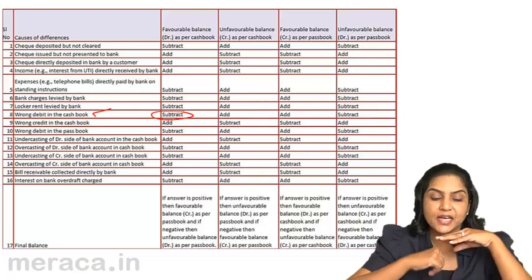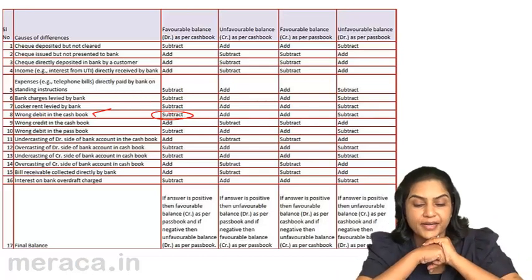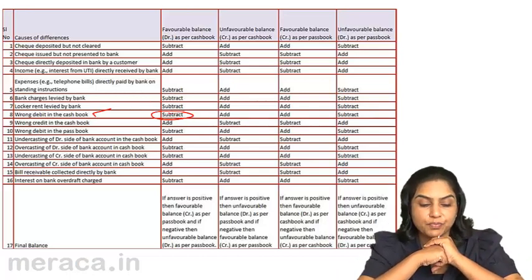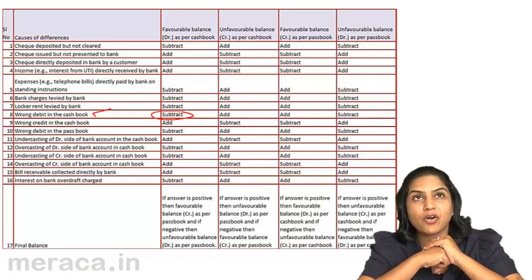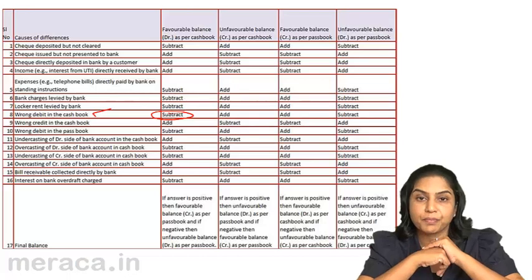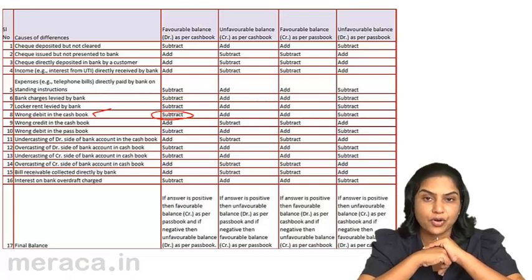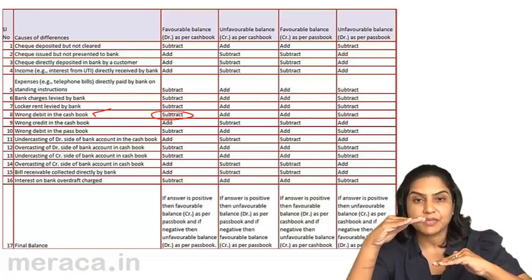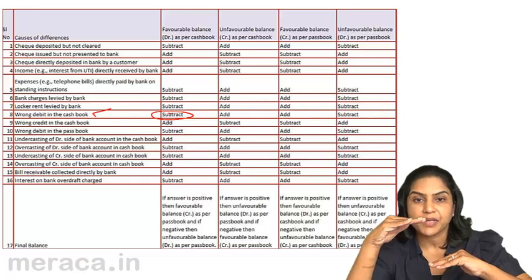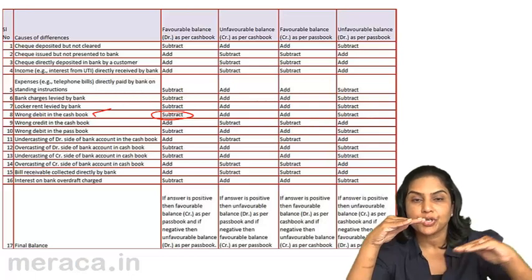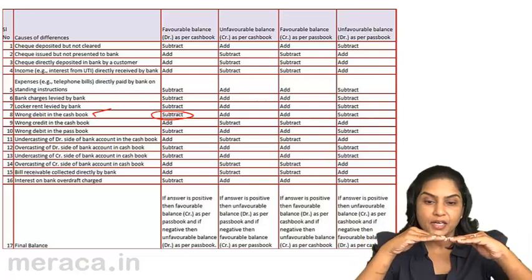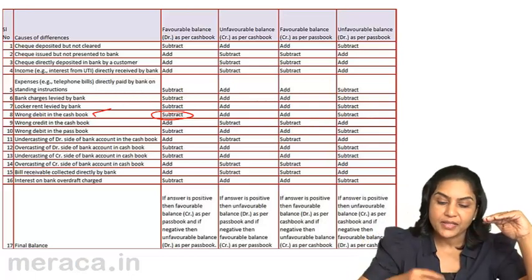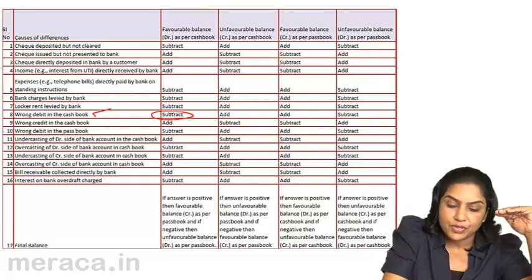Similarly, a wrong credit in the cashbook would mean more withdrawals and therefore the balance comes down. If you start from the cashbook, you would add to arrive at the passbook.